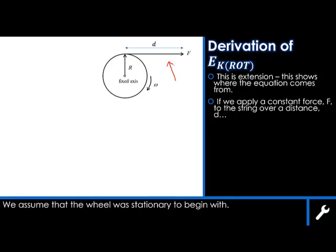then it'll produce a torque on the stationary wheel and the torque is given by τ = FR, as we learned in year 12, because the force is being applied here and that is a distance r away from the axis.